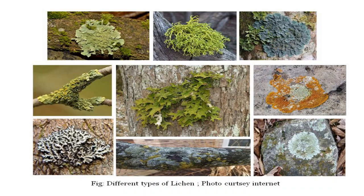The body of the lichen is called a thallus, as it is very simple and not differentiated into proper root, stem, and leaf. The thallus may be homoisomerous or heteromerous. In homoisomerous types, the fungal hyphae and algal cells are more or less uniformly distributed, as seen in crustose lichens.